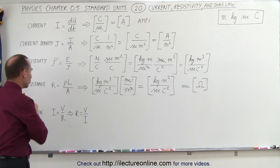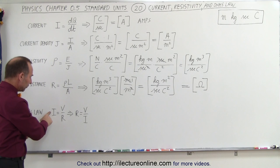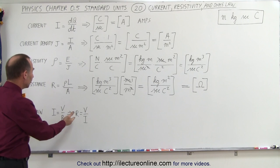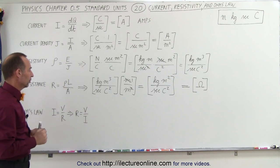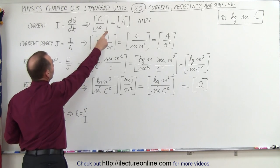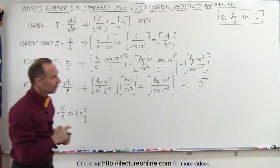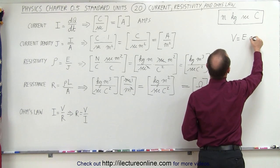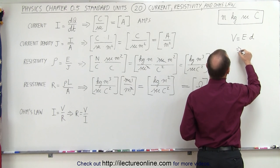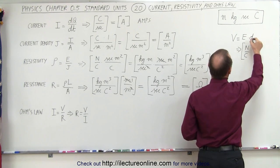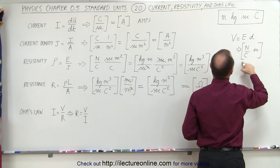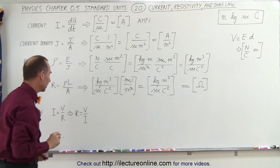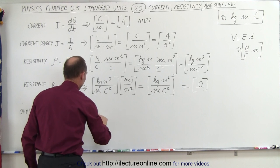And finally, Ohm's law. The current flow through a circuit equals the voltage applied divided by the resistance in the circuit, which means resistance can also be defined as voltage divided by current. We know the units for current, but the units for voltage — voltage can be defined as the electric field times the distance traveled through it. The electric field has units of Newtons per Coulomb, and the distance is meters, so voltage can be expressed as Newton meters per Coulomb.